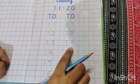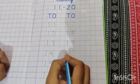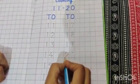And what comes after 1, 9, 19? Very good. 2, 0, 20.